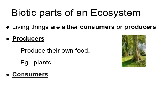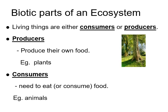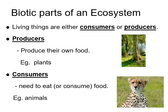Anything like a plant is a producer. There's also algae and some bacteria that can produce their own food through photosynthesis — the process of producing your own food from sunlight. Consumers are anything that needs to eat or consume food. Humans obviously need to eat; we can't just sit out in the sun and produce our own food.